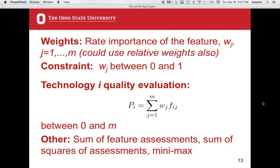After we have the assessments and the weights, we aggregate them into a quality assessment for technology I. That formula is P_I equals the sum from J equals 1 to M of W_J times F_IJ. This clearly lies between 0 and M since there are M possible features. This is a simple linear combination of the importance weights and the numerical assessments. There are many other possibilities, such as a sum of squares of assessments or a minimax approach, which are covered in the book.